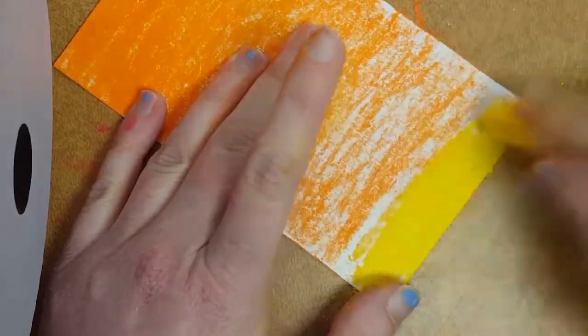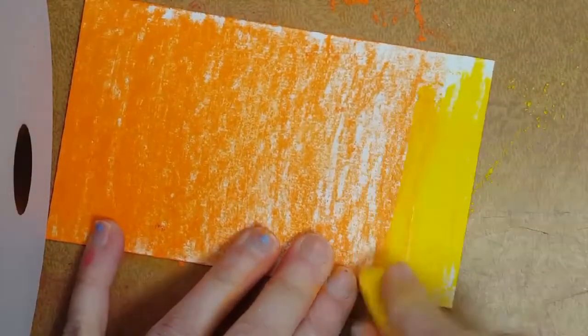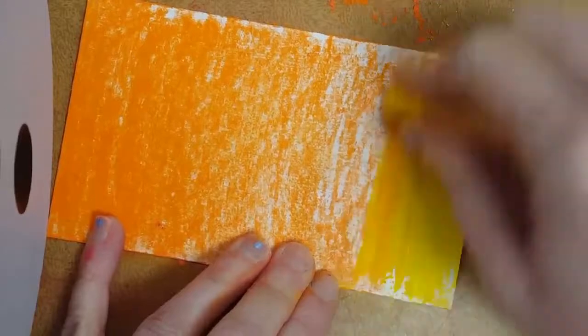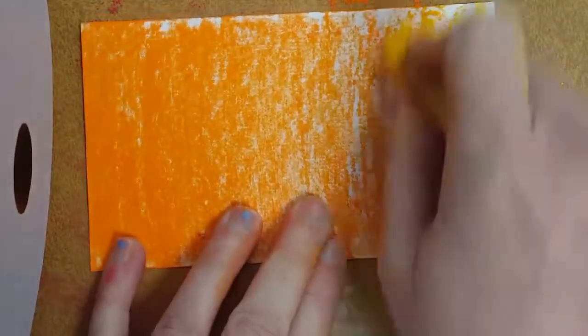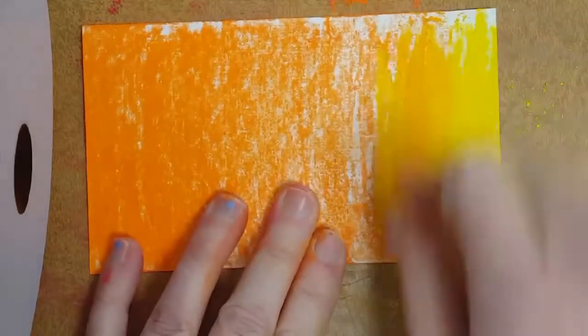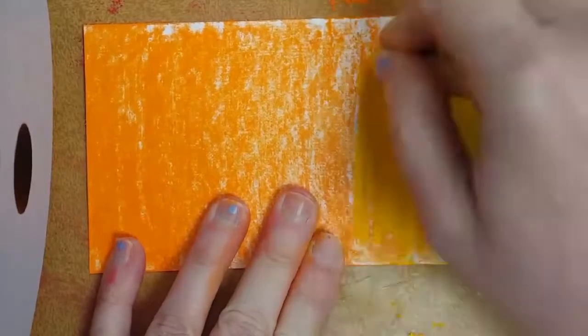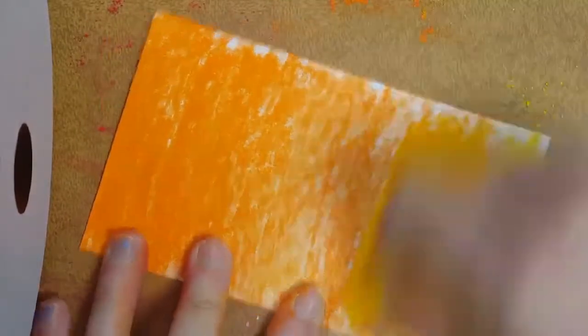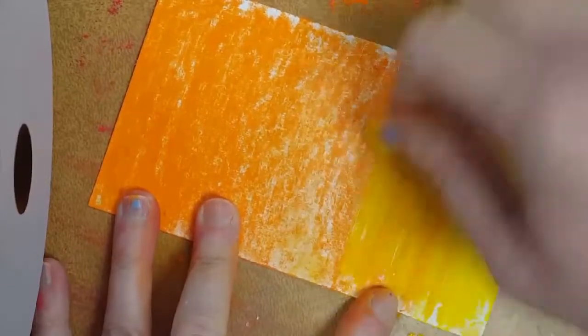So with my yellow, this yellow is fighting me today. I am going to press really hard with it. And it's fighting me a little bit. So with the yellow, I'm pressing really, really hard. And what's cool about this, it's creating different versions, different versions of yellow-orange, which I think is awesome.